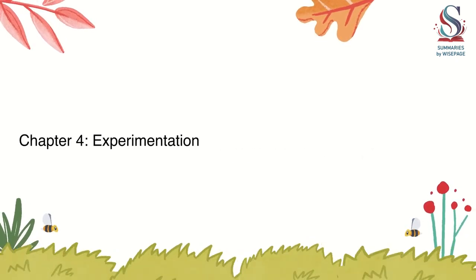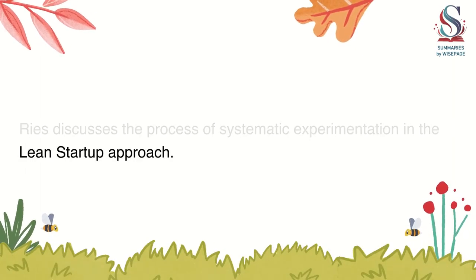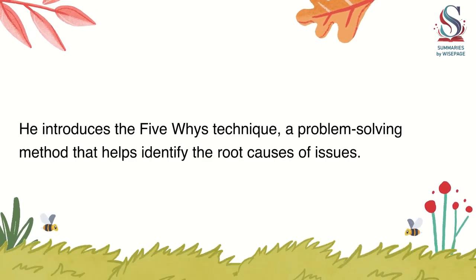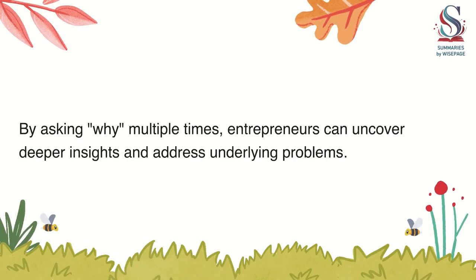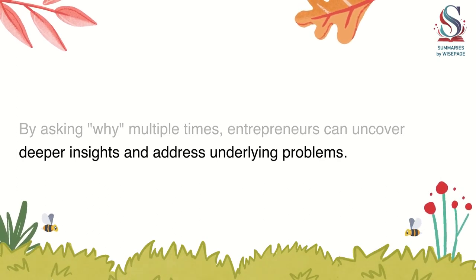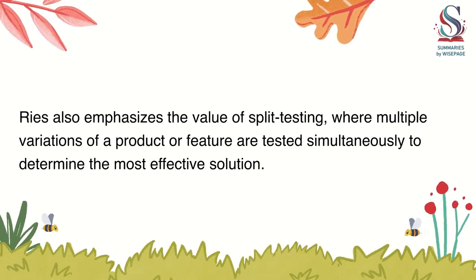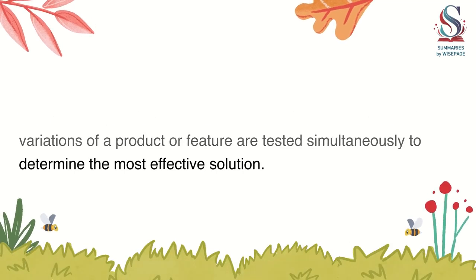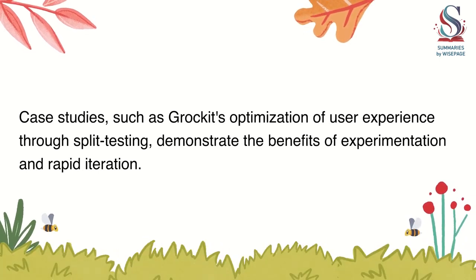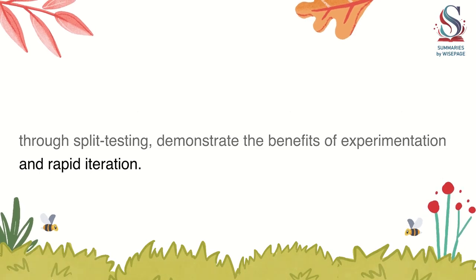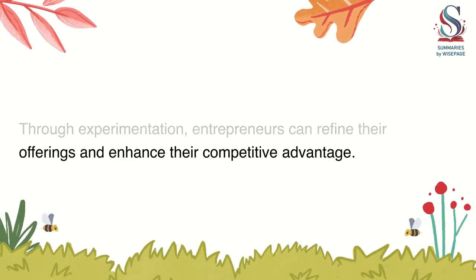Chapter 4: Experimentation. Ries discusses the process of systematic experimentation in the Lean Startup approach. He introduces the 5 Whys technique, a problem-solving method that helps identify the root causes of issues. By asking why multiple times, entrepreneurs can uncover deeper insights and address underlying problems. Ries also emphasizes the value of split testing, where multiple variations of a product or feature are tested simultaneously to determine the most effective solution. Case studies, such as Grokett's optimization of user experience through split testing, demonstrate the benefits of experimentation and rapid iteration. Through experimentation, entrepreneurs can refine their offerings and enhance their competitive advantage.